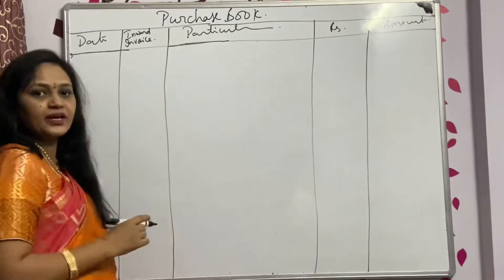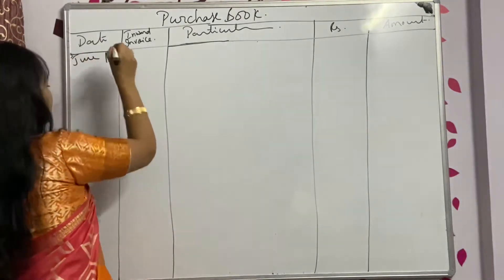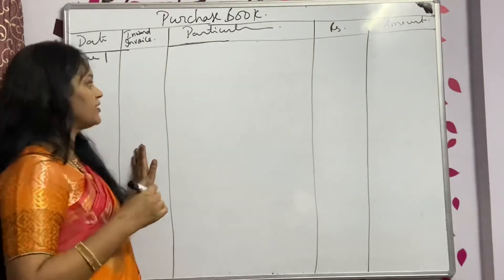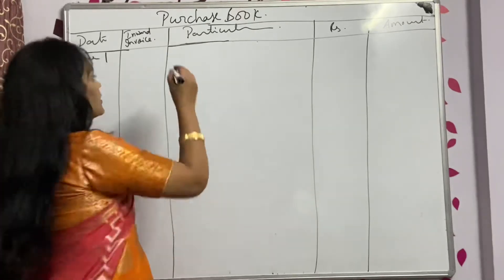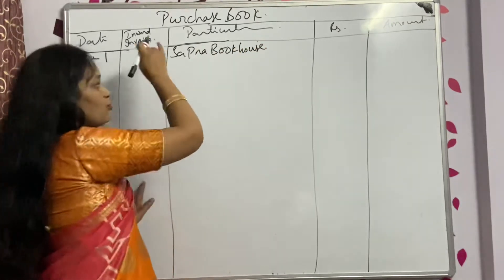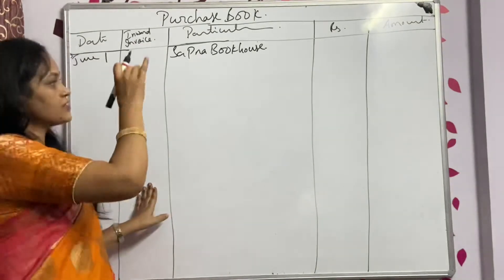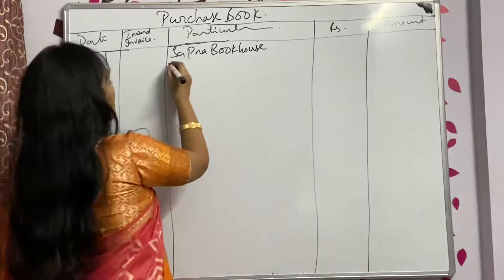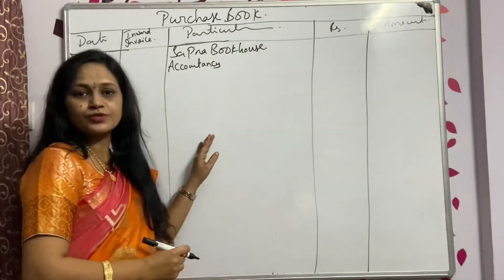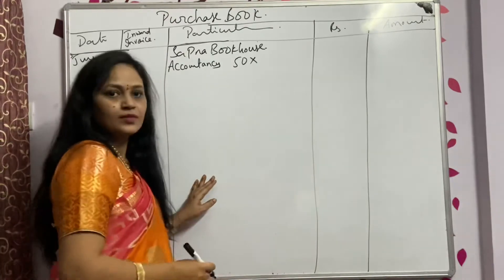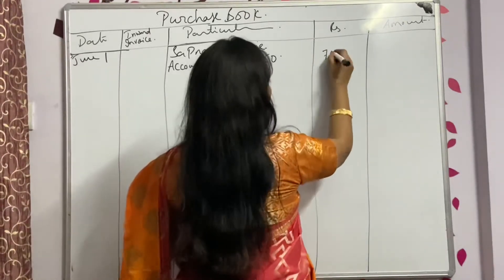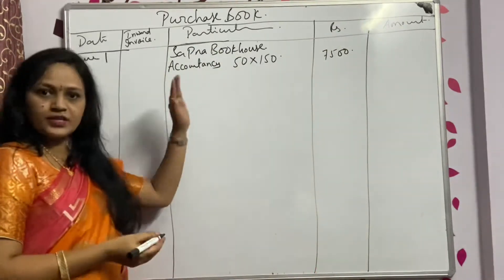What is the first transaction? The date is June 1st. We purchased 50 accountancy books from Sapna Book House. Just read the transaction and write it down. We purchased 50 books at ₹150 per book. The total amount is 50 into 150 = ₹7,500.